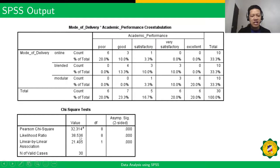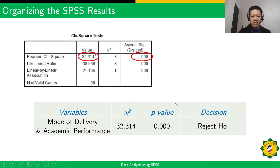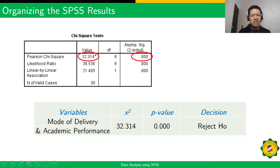For the significant relationship, base it on the second table. Your table will have columns for the variables, the chi-square symbol, the probability value (p-value), and the decision. The computed chi-square value is 32.314 — found below the word 'Value' — and the p-value is 0.000, found below the word 'Sig'.